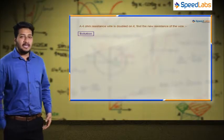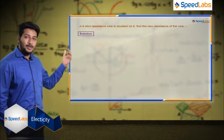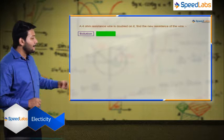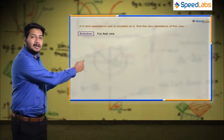Okay, so one more problem I am taking on the same concept that resistance is equal to rho into L upon A. In this question, they are saying that you have taken a wire and that wire you double.